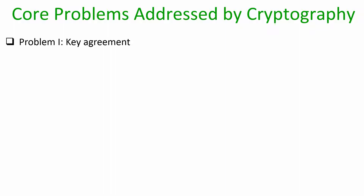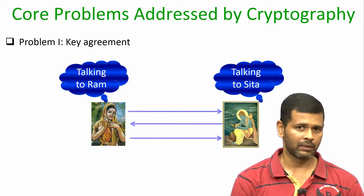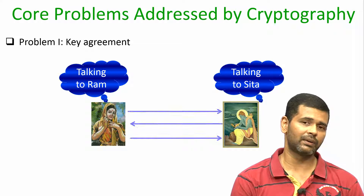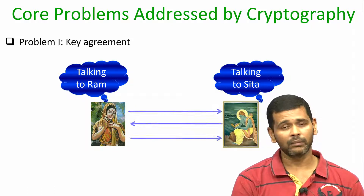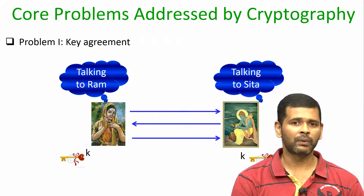In the last lecture we discussed that the central problem addressed by cryptography is that of secure communication. It turns out that secure communication is solved by addressing two core problems. The first core problem is key agreement. In the key agreement problem, we have two entities — a sender and a receiver — who do not know each other, have no pre-shared information, and are meeting for the first time. The protocol requires them to talk over a public channel and at the end, both should output a common key.